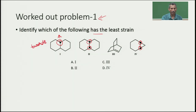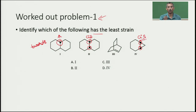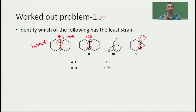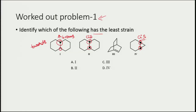If both groups are pointing towards the observer, this is a cis-type arrangement. If one dot is present and another is not, this is a trans orientation — one group points towards the observer and another points away. We have four structures and must identify which has the least strain, i.e., which is most stable or has the lowest energy.